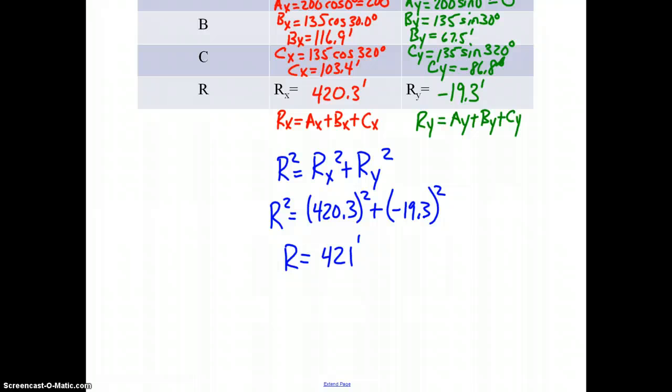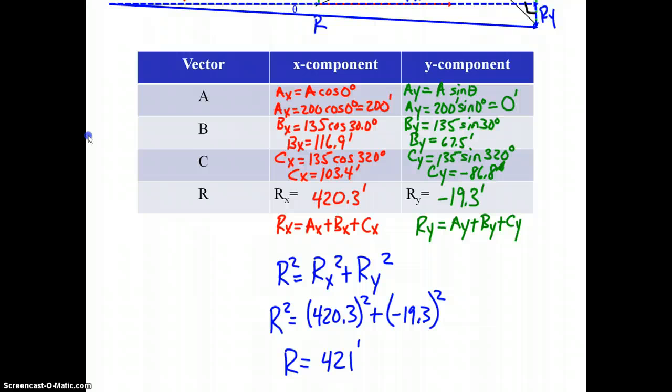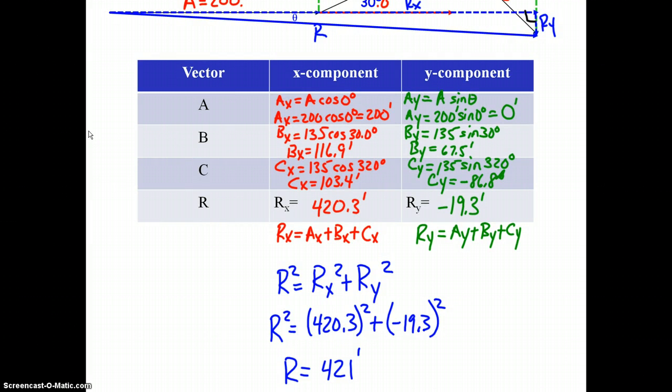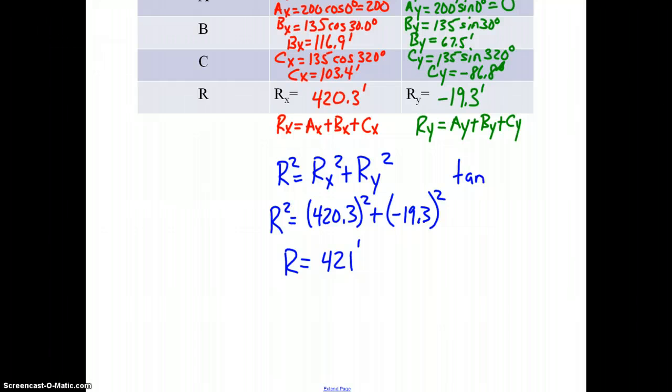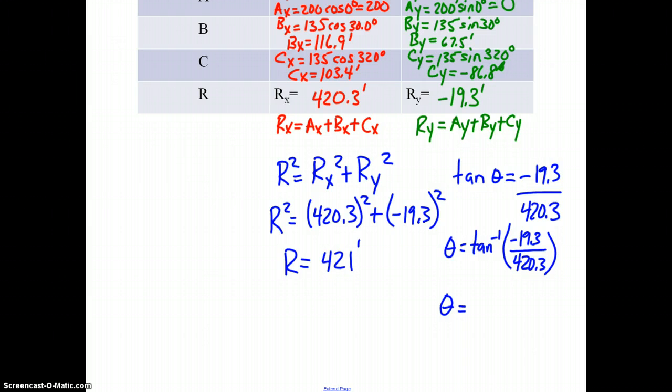We now have to find the angle. What trig function relates the angle to Rx and Ry? Ry is opposite and Rx is adjacent, so that would be tangent. The tan of theta would be opposite, which is your y component negative 19.3, over your x component 420.3. Theta is the inverse tangent of negative 19.3 over 420.3. When we do the inverse tangent of that, we get negative 2.63 degrees to three digits.